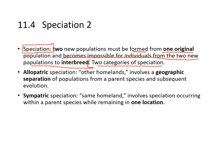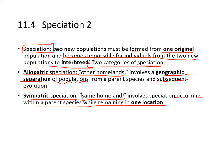When two populations form from one and interbreeding between them becomes impossible, speciation occurs. There are two categories: allopatric speciation — meaning 'other homeland' — involving geographical separation of a population from the parent species, followed by separate evolution; and sympatric speciation — 'same homeland' — involving speciation within a parent species while remaining at the same location.